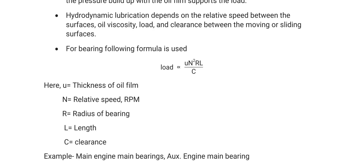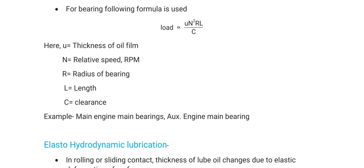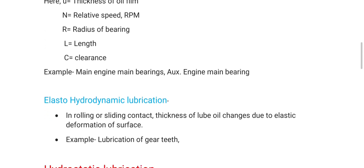In the formula, load is directly proportional to mu (viscosity) times N (relative speed in RPM) times R and L (radius and length, which is the projected area), divided by C (clearance). Examples of this type of lubrication are main engine main bearings and auxiliary engine main bearings.